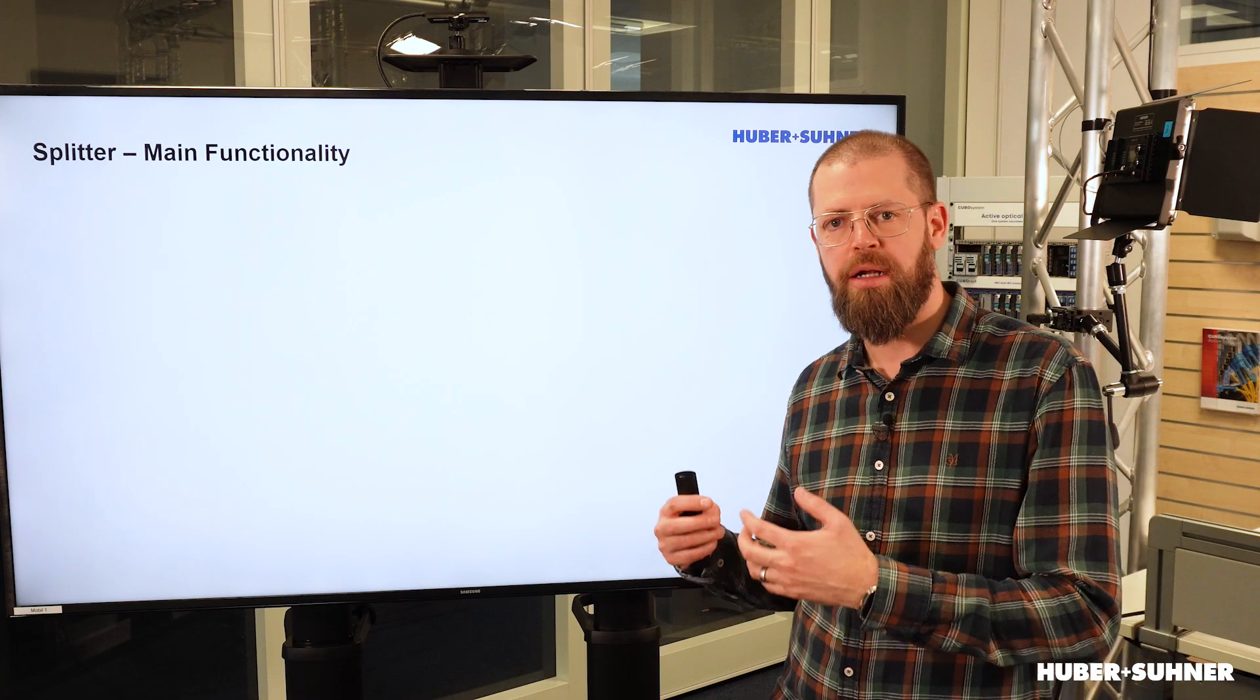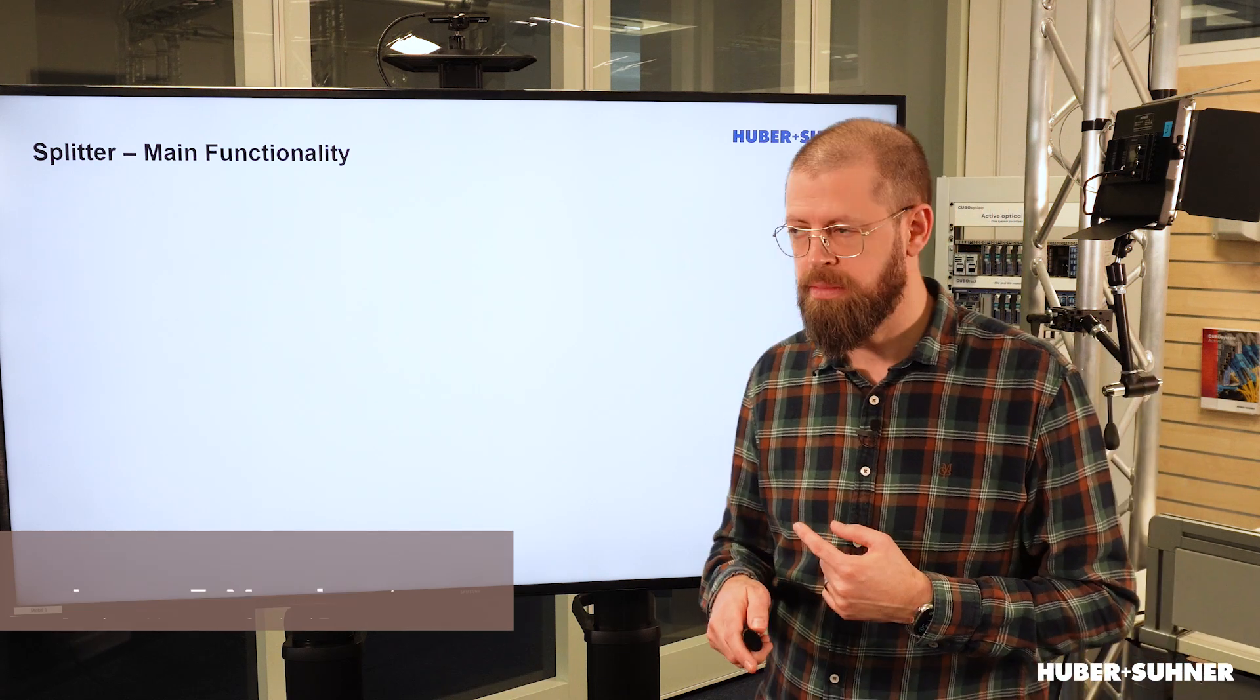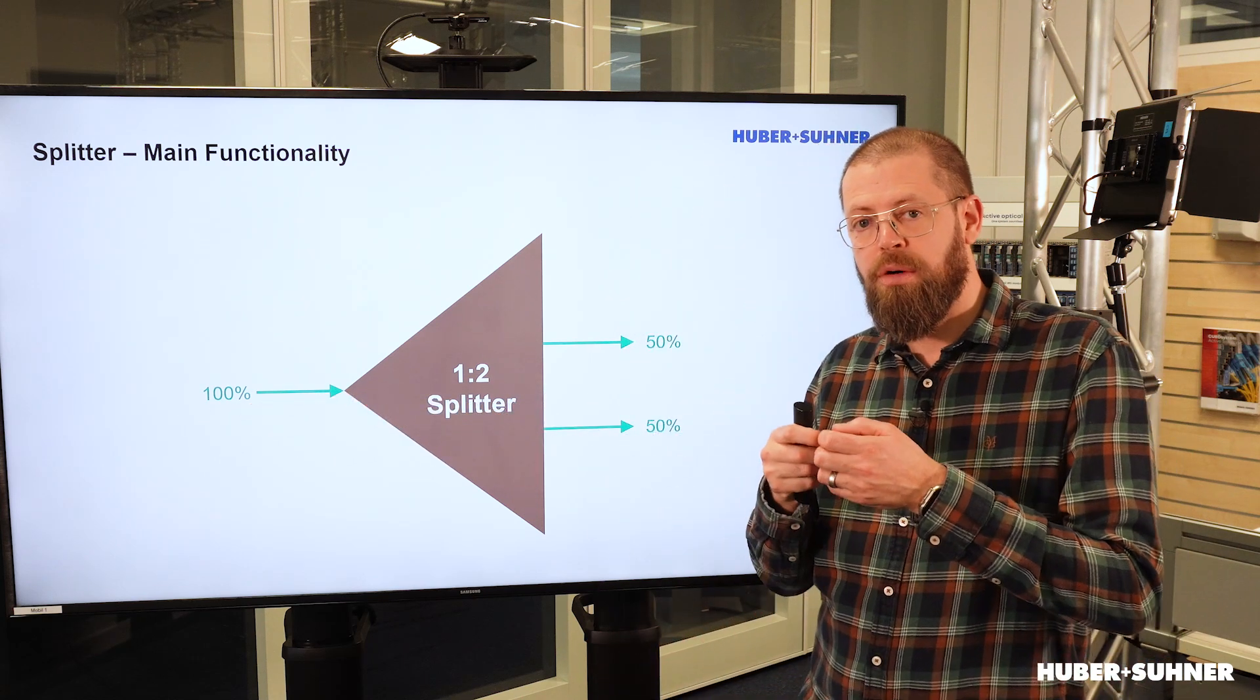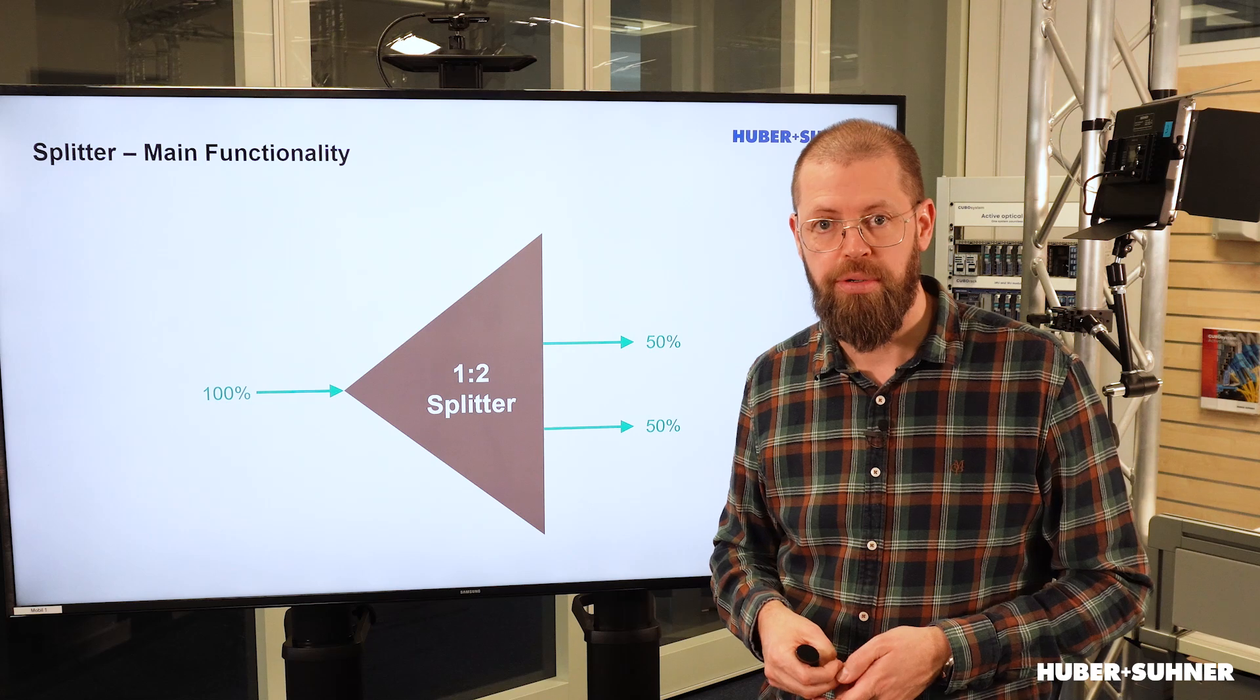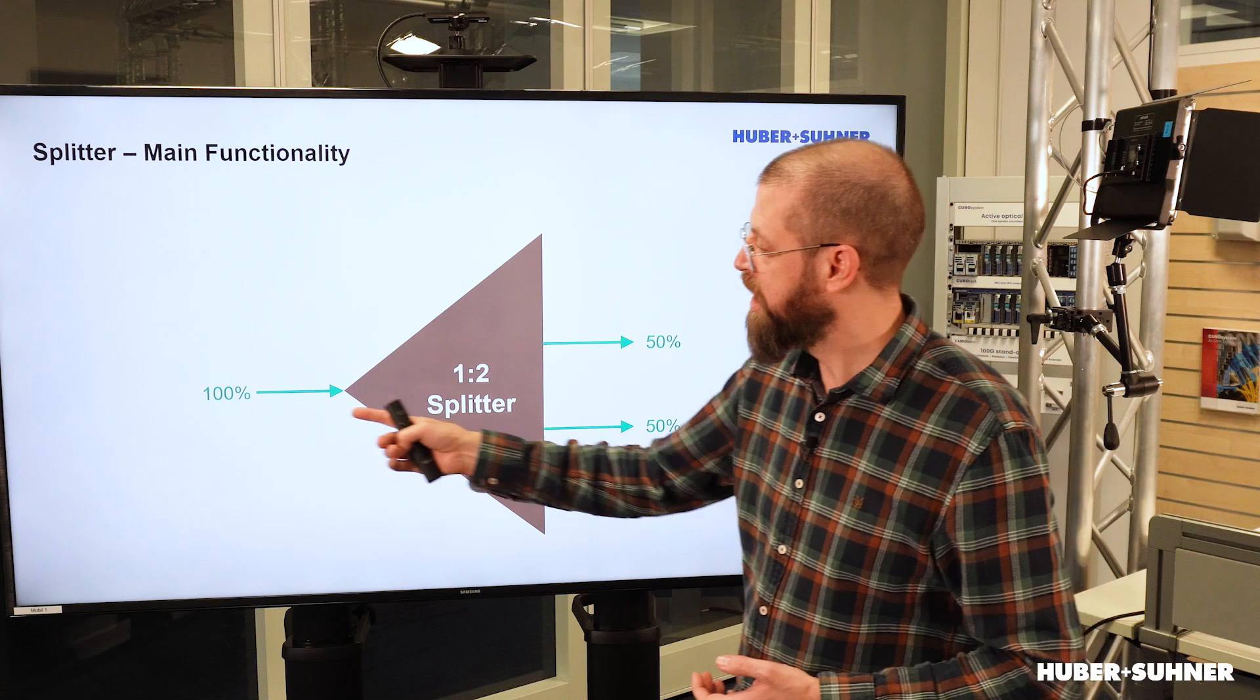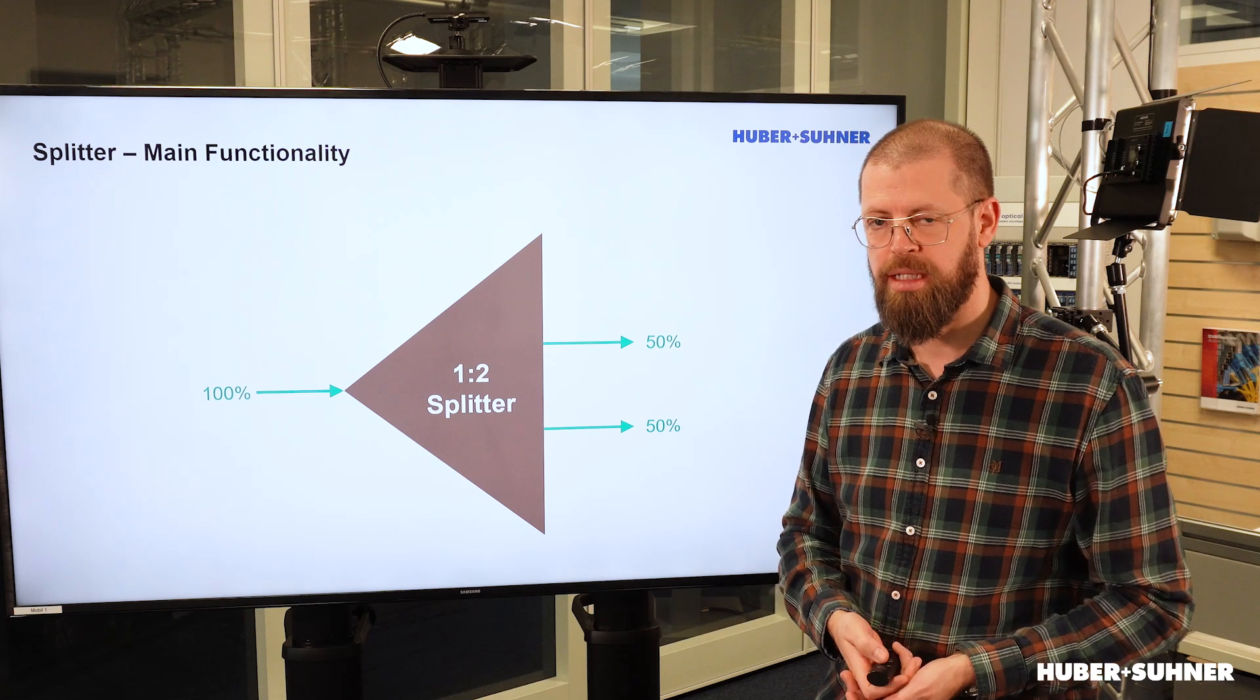To understand the difference between an optical splitter and an optical multiplexer, so WDM, let's first have a look at optical splitters. Basically what an optical splitter does is it takes this optical signal and it will literally split the signal onto the different outputs, but completely passively. And because it's passive, in this case we've got a 1x2 splitter, that the 100% optical input signal is then divided into 2x50% of the optical signal.